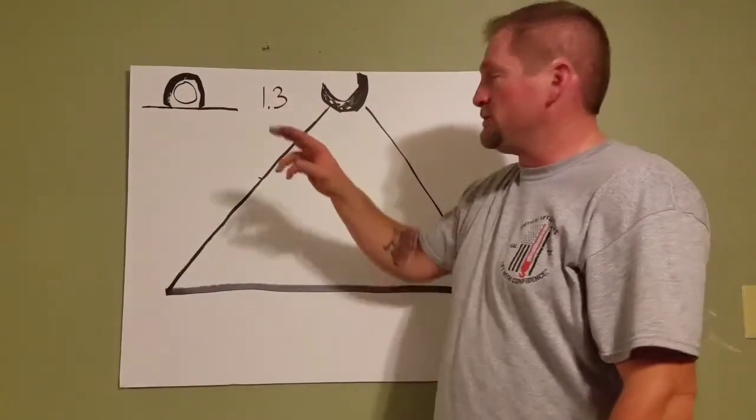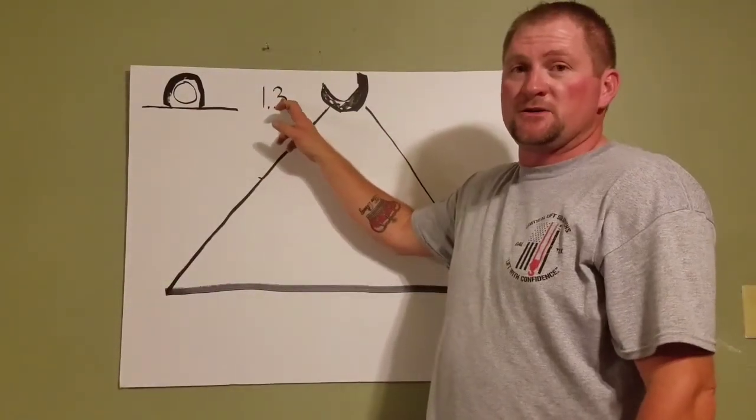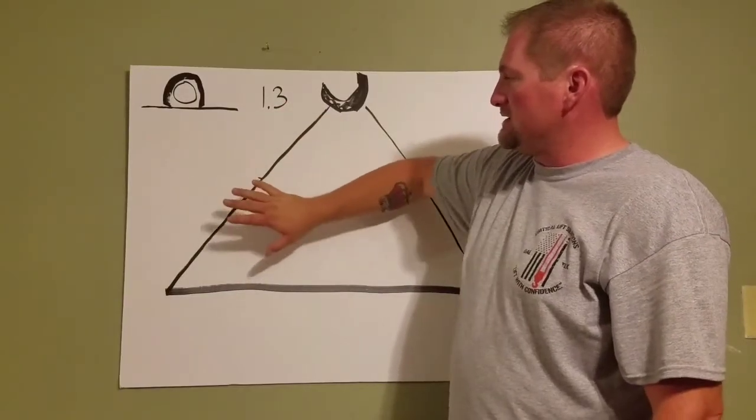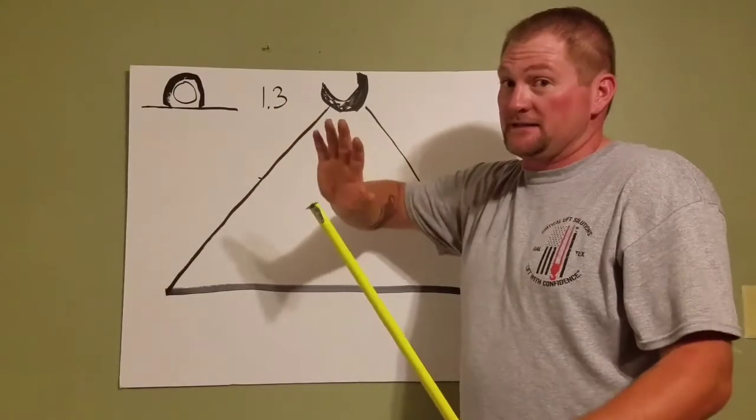All you have to do is put a decimal point in between the two numbers. The sling angle multiplier on this would be 1.3. That's how easy it is.